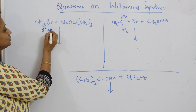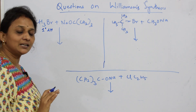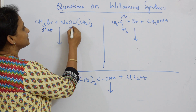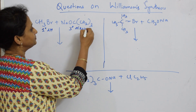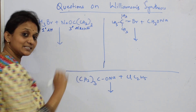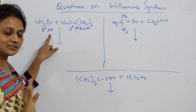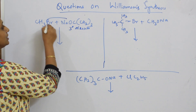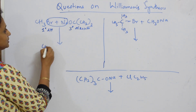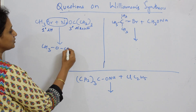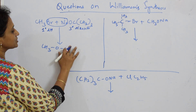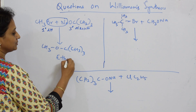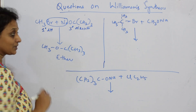As soon as you see a primary alkyl halide, automatically we say: use a tertiary alkoxide. If you find a primary alkyl halide, just close your eyes and finish it off — take out NaBr and prepare the ether. Primary alkyl halide always gives ethers. Simple.